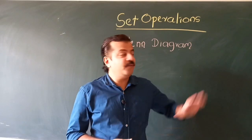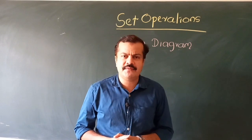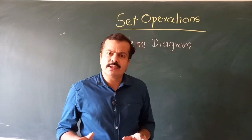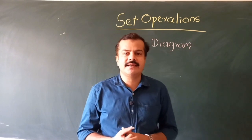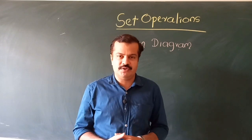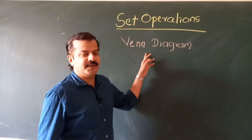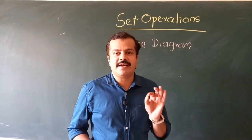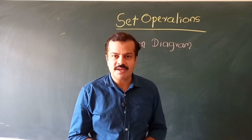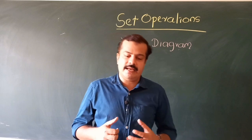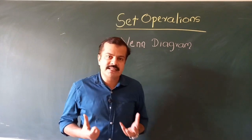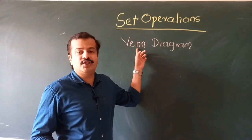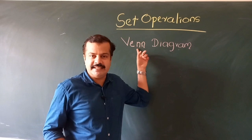Before explaining various set operations, let us first clarify the meaning of Venn diagrams. Sets as well as set operations can be represented by drawing pictures or diagrams, which is popularly known as the Venn diagram. So a Venn diagram is a pictorial representation of sets, explaining the concept of set using diagrams and pictures.